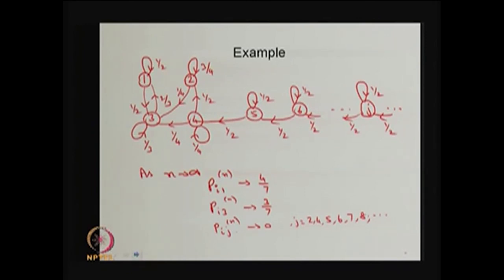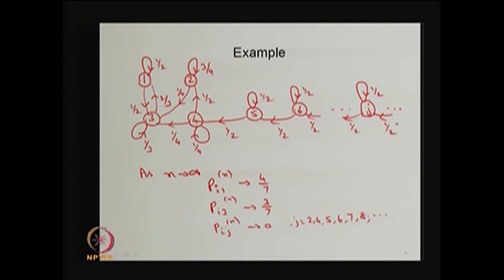Now a simple example with an infinite state space. This is a reducible Markov chain because from states 4 and 2 the system can reach state 3, but there is no arc from 3 to 4 or from 3 to 2. Therefore states 2, 4, 5, 6 and so on are all transient states, while states 1 and 3 form one closed communicating class. This is a reducible Markov chain with closed communicating class {1, 3} and all other states transient.